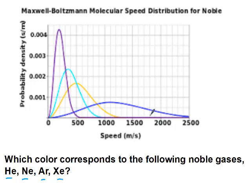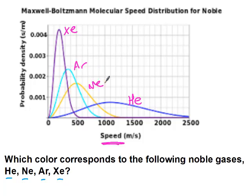On a Maxwell-Boltzmann distribution, the dark blue curve with the greatest average speed corresponds to the lightest noble gas—helium. Xenon has the largest molar mass and therefore the lowest range of velocities. The distribution could also apply to temperature: the curve with the broadest/fastest distribution represents the highest temperature or smallest molar mass.